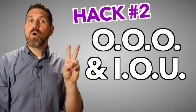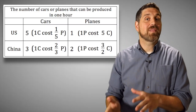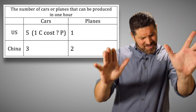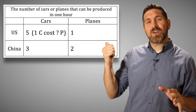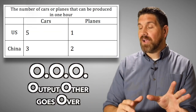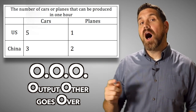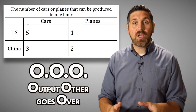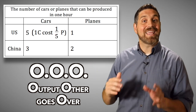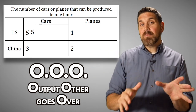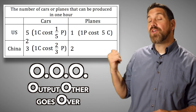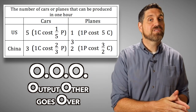Hack number two: OOO and IOU. The next step is calculating the per unit opportunity cost — how much does each one car cost the United States in terms of planes given up? This is where students get confused: does one car cost one fifth of a plane or five planes? If they get it wrong, they're done. Here's the hack: for output questions, remember OOO — other goes over. If you're calculating the opportunity cost of a car, you take the number of planes and put it over the number of cars. So for the US it's one over five — each car costs one fifth of a plane, and each plane costs five cars. For China, each car costs two thirds of a plane and each plane costs three halves of a car.